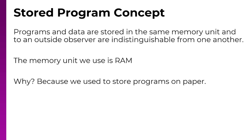The first thing we need to understand is the stored program concept. The idea is that the program and the data that a program needs — such as a variable or a file — are all stored in the same location, which is main memory. We can look at memory and we wouldn't know which bit belongs to which. The memory unit we use is RAM, random access memory.